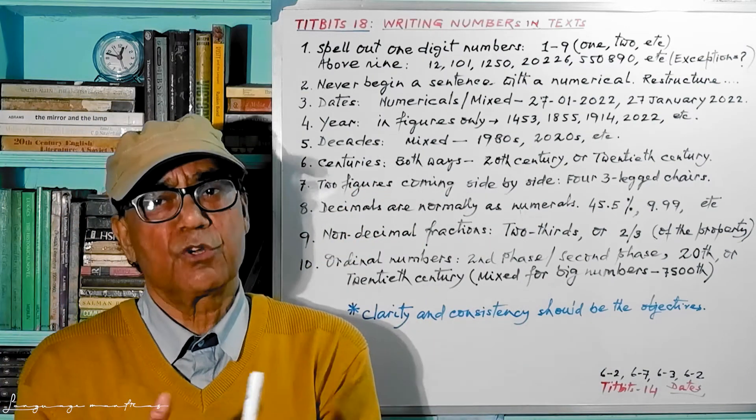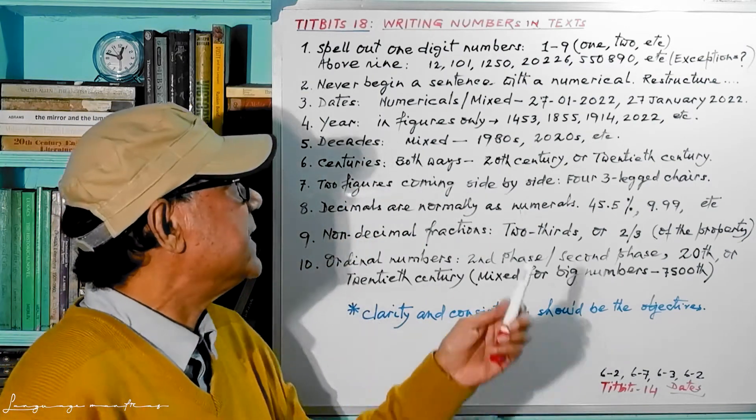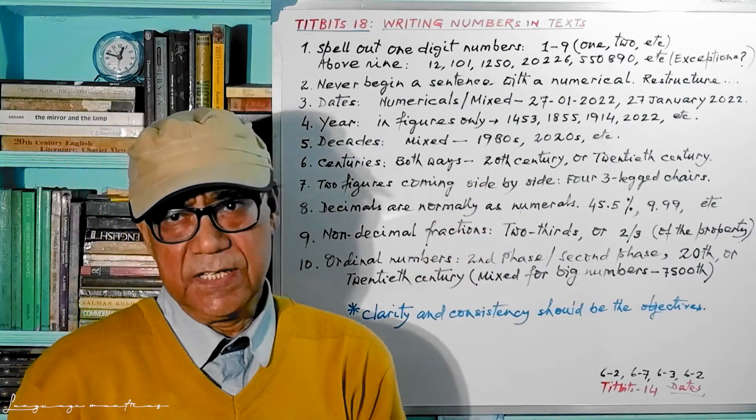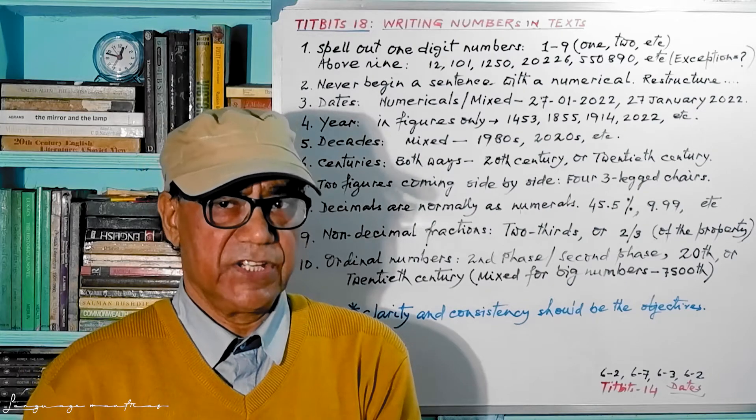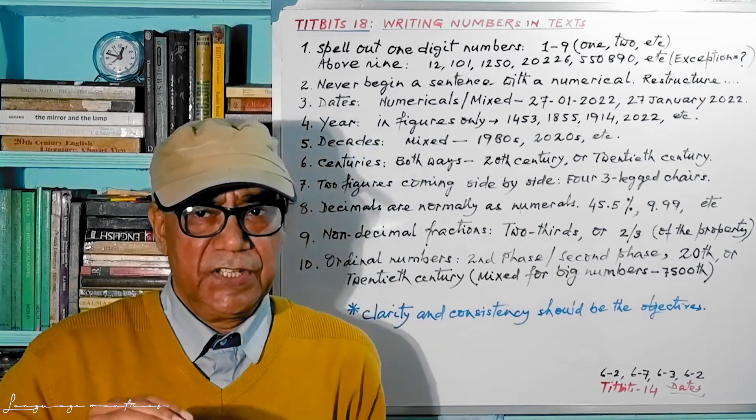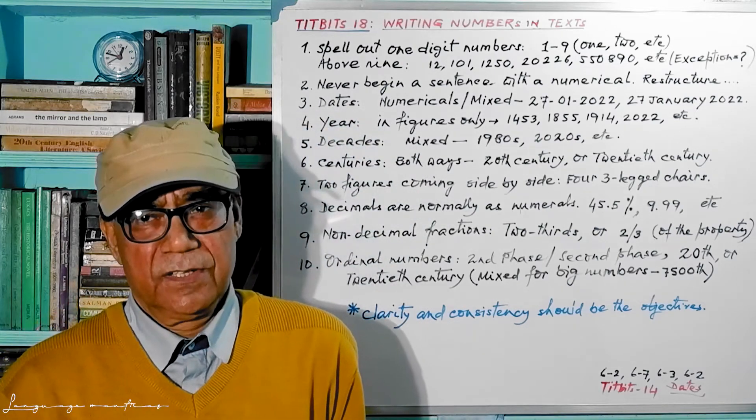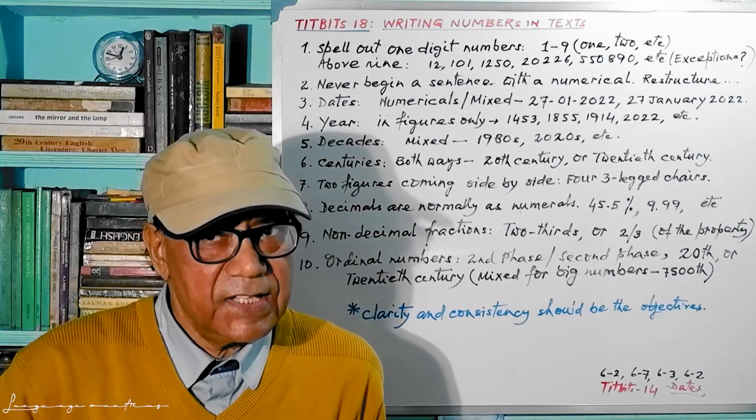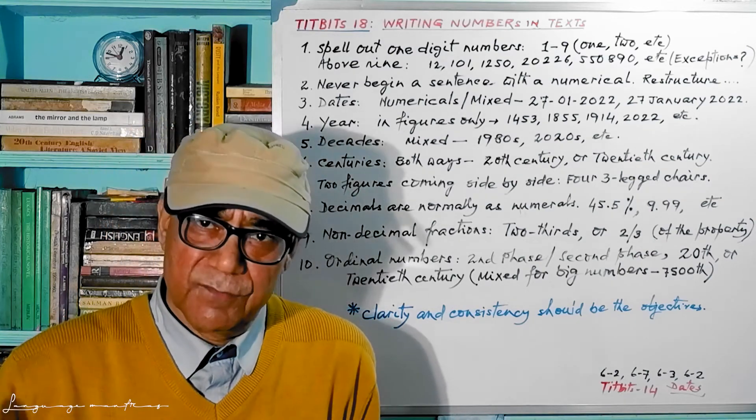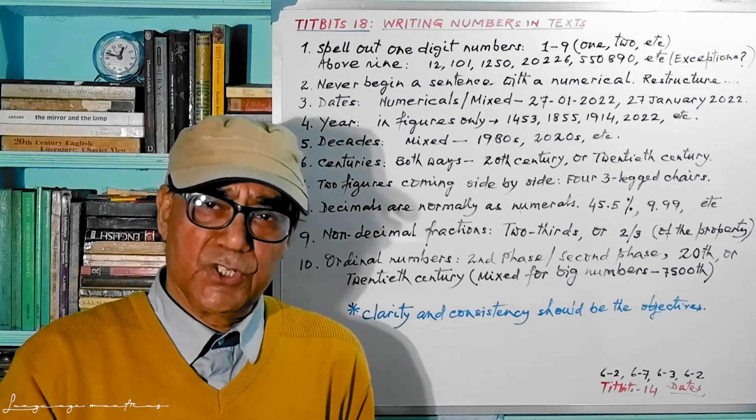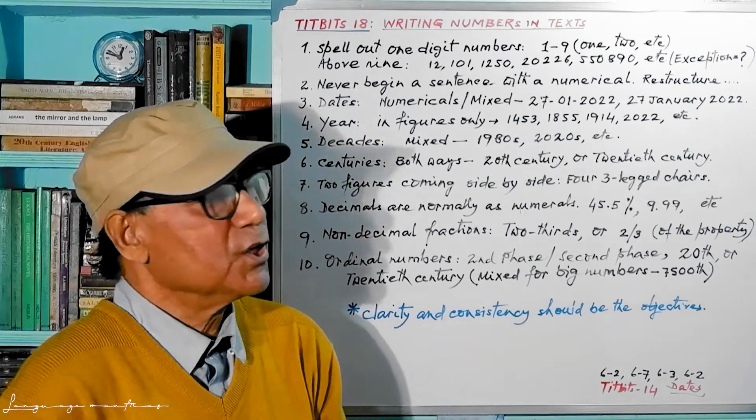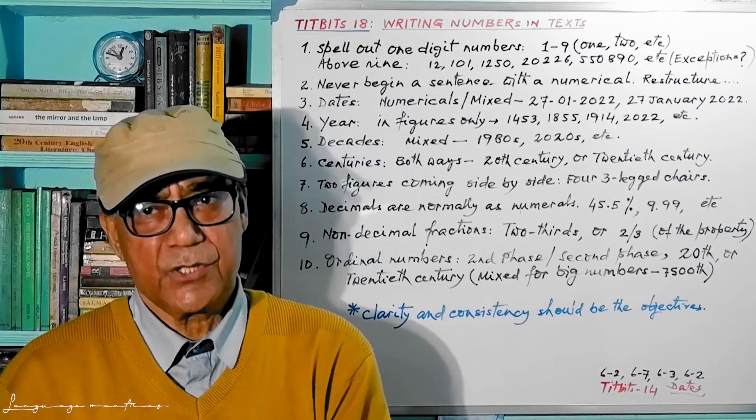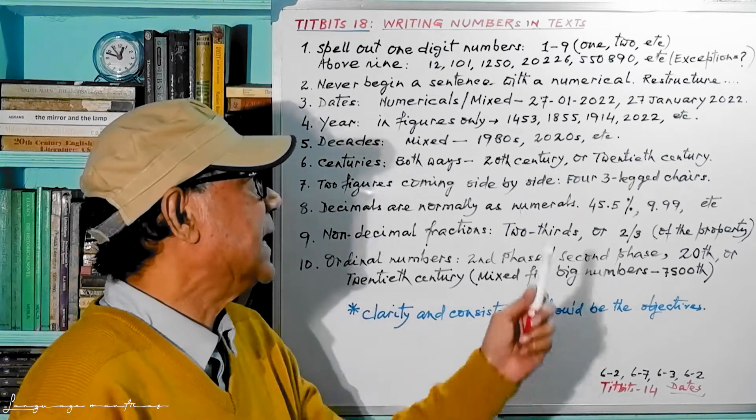Come to the next point: decades. Decades mean 10 years together. So when I say 1880, actually I refer to just one year, 1880, and 1880 is the beginning of a decade. So is 1860, 1940, 1920. This is the beginning of a decade.